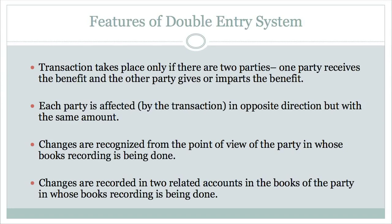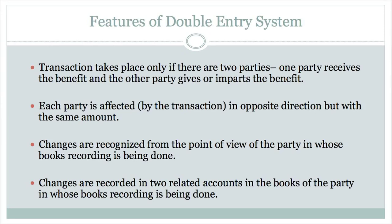The changes are recognized from the point of view of the party whose books of accounts are being recorded. So each transaction — I will record my aspect in my books of accounts and you will record your aspect, the impact of that particular transaction in your books of accounts from your point of view. The same transaction, the same amount, but the recording will take place in a different way. Changes are recorded in two related accounts in the books of the party in whose books recording is being done.